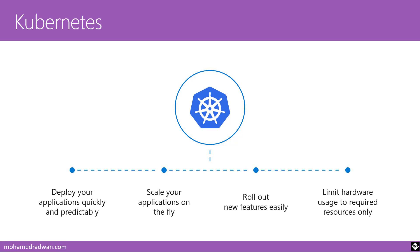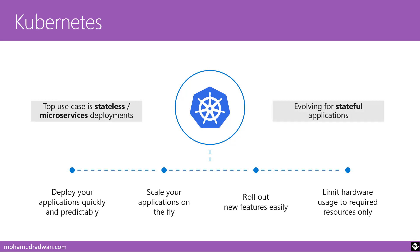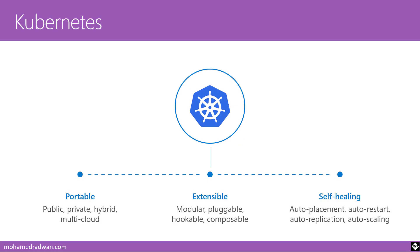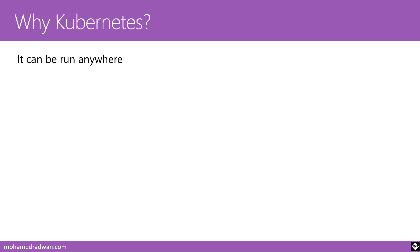Kubernetes helps you deploy applications quickly and predictably, scale applications on the fly, roll out new features easily, limit hardware usage to required resources only, and achieve best utilization. Top use cases include stateless microservice deployments, and it is evolving for stateful applications as well. Key features include portability — it can work on public, private, hybrid, or multi-cloud environments — extensibility through community-developed extensions, and self-healing with auto-placement, auto-restart, auto-replication, and auto-scaling.